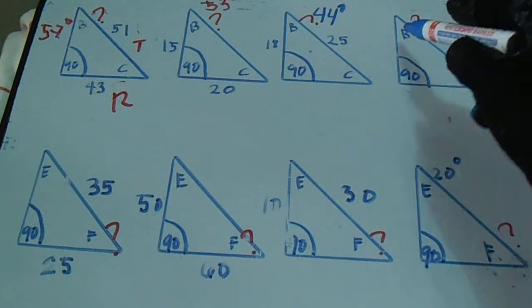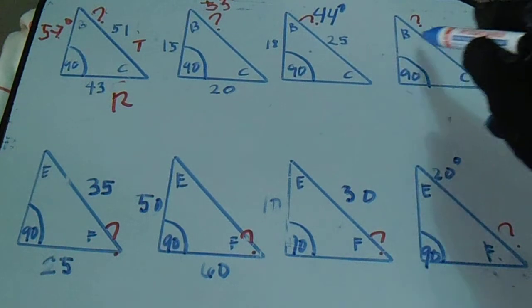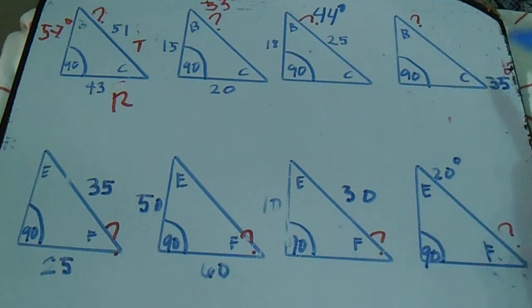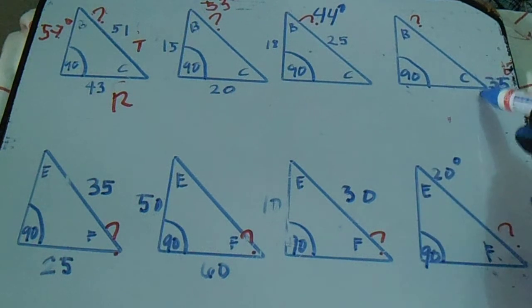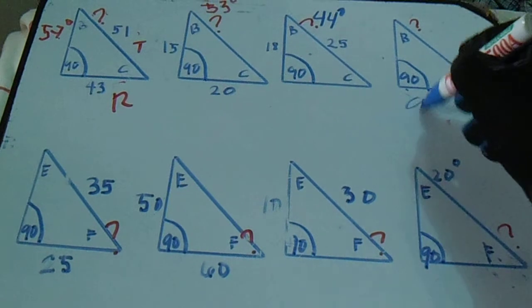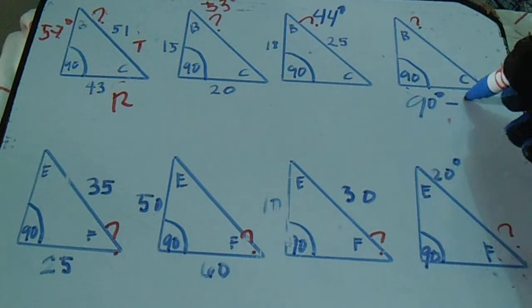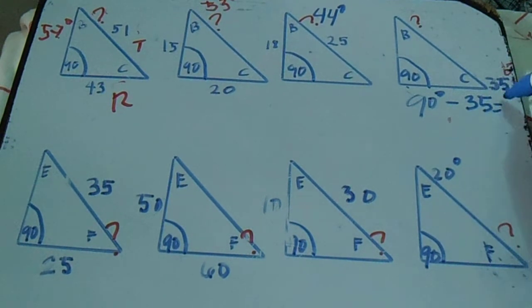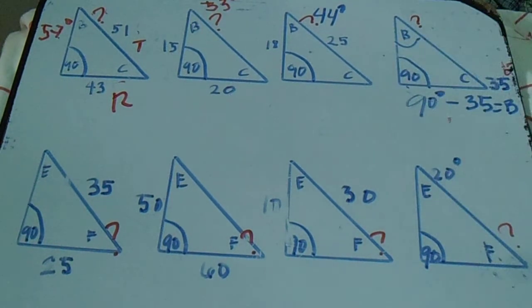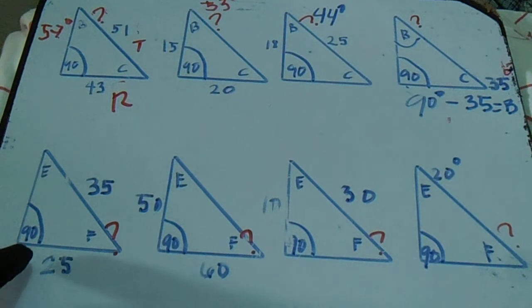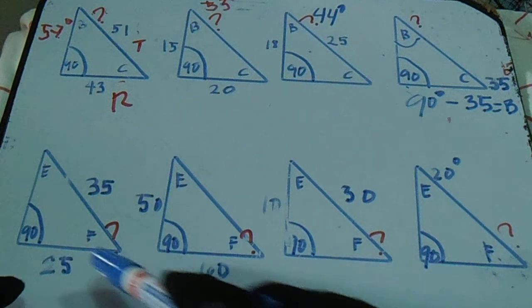This is very simple. When we don't have a length for set, run, and travel, but we have degrees — 90 degrees and 35 degrees — just subtract: 90 degrees minus 35 equals letter B. That is the degrees for that triangle.